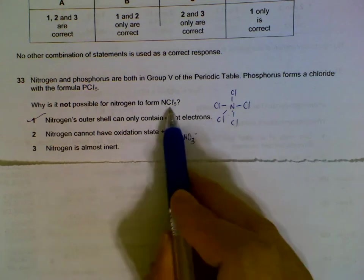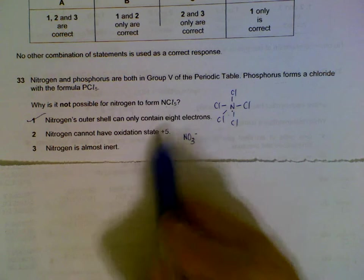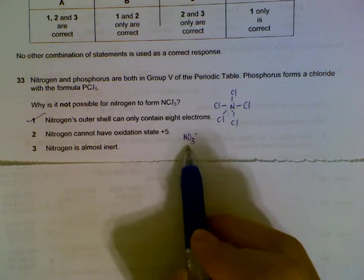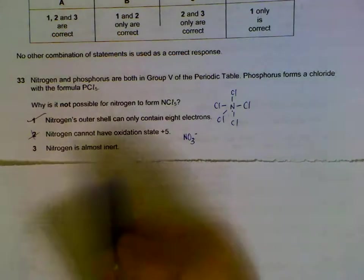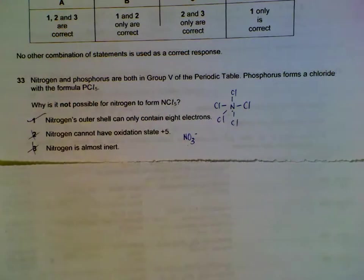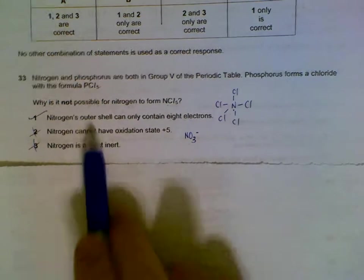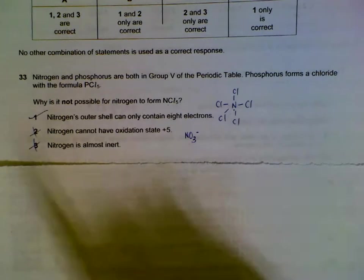So statement one is correct—it can contain a maximum of eight. Nitrogen can have oxidation number of plus five—not relevant to forming NCl5, but okay for the statement. You can see we can have N5+ where we have nitrates. Nitrogen is almost inert—it's not relevant here. The main thing is we cannot expand the octet for nitrogen.